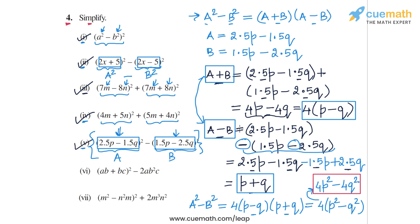So 4p² - 4q² is the final simplified form of the expression in part 5. This is a slightly trickier question compared to the other parts, so make sure you've followed it fully.